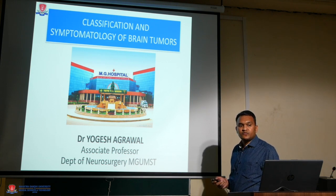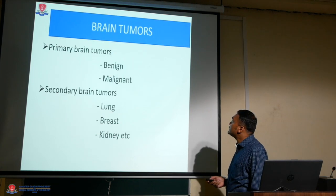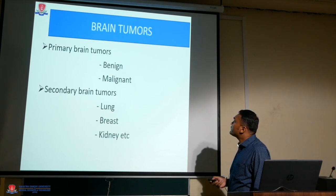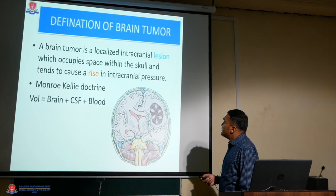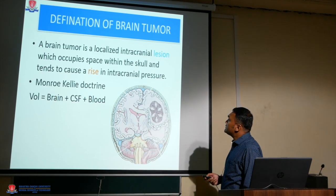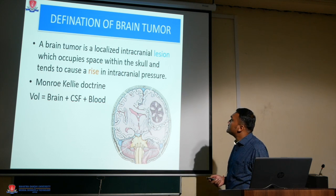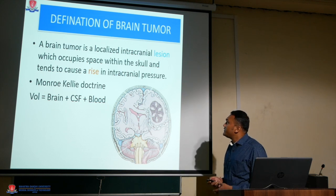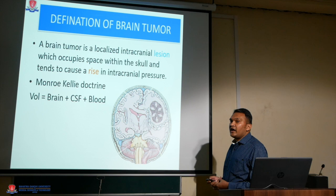A brain tumor is a localized intracranial lesion which occupies the space within the skull and tends to cause a rise in intracranial pressure. As per the Monroe-Kelly doctrine, the total volume of the cranium is equal to brain plus CSF plus blood.